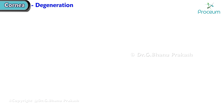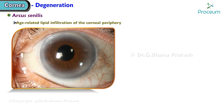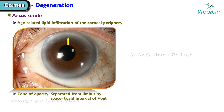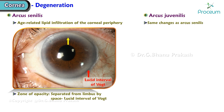Corneal degeneration: Arcus senilis is an age-related lipid infiltration of the corneal periphery. The zone of opacity is separated from the limbus by a space called the lucid interval of Vogt. Arcus juvenilis shows the same changes as arcus senilis but is seen in young adults due to diabetes.